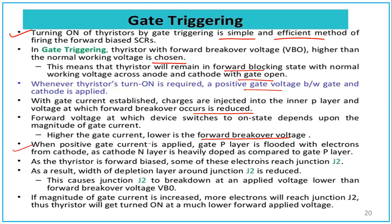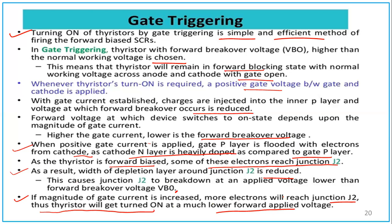With gate current established, charges are injected into the inner P layer and the forward breakover voltage is reduced. When the gate pulse is applied, the P layer is flooded with electrons from the cathode, since the cathode N layer is heavily doped compared to the P layer. These electrons reach junction J2, reducing the width of its depletion layer. Higher gate current results in lower forward breakover voltage. If the gate current magnitude is increased, more electrons reach J2 and the thyristor turns on at a much lower forward applied voltage.